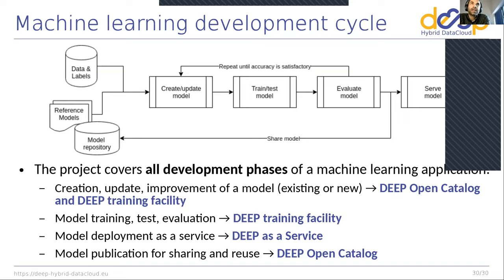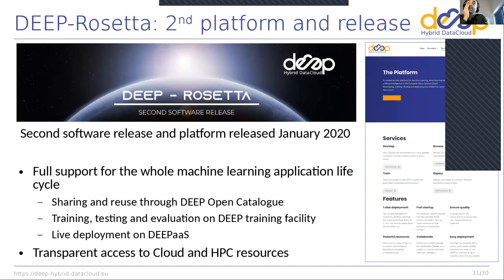In summary, the DEEP Hybrid Data Cloud platform covers the whole ML development lifecycle — training, evaluation, model deployment, and catalog for sharing. It provides access to GPU resources transparently for users without needing to know about drivers, NVIDIA CUDA versions, or frameworks. The services — the open catalog, training facility, and DEEP as a Service — are in production. We released the second software release in January 2020 and it can be used for development activities.